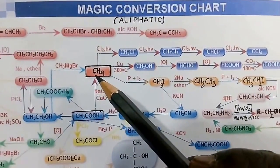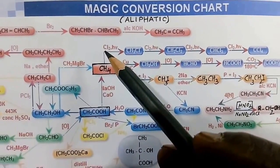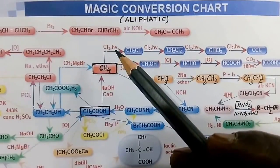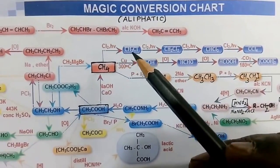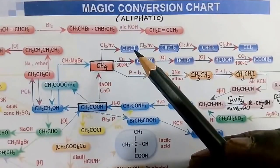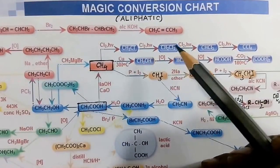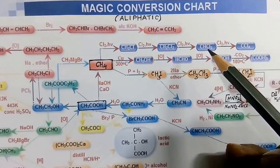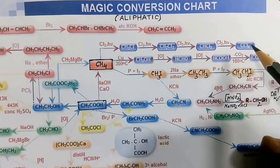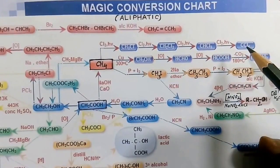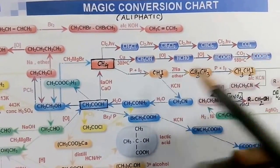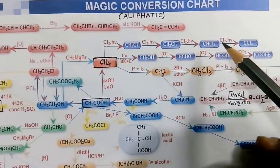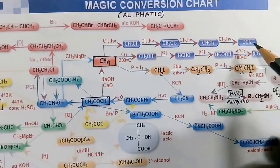Methane, whenever treated with chlorine in the presence of diffuse sunlight, gives methyl chloride, then methylene chloride, then chloroform step by step, and finally carbon tetrachloride. So: methyl chloride, methylene chloride, chloroform, and carbon tetrachloride.